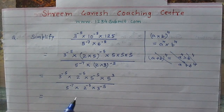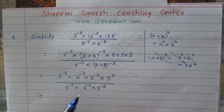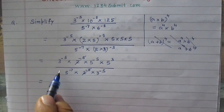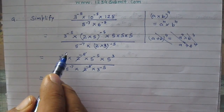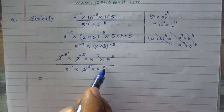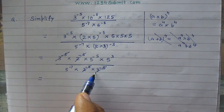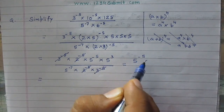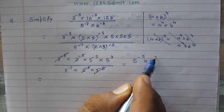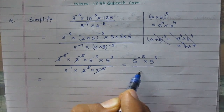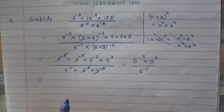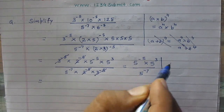Now, 2 raised to power minus 5 is present in both the numerator and denominator, so they cancel. Similarly, 3 raised to power minus 5 in the numerator cancels with 3 raised to power minus 5 in the denominator. Finally, we get 5 raised to power minus 5 multiplied by 5 raised to power 3 in the numerator, and 5 raised to power minus 7 in the denominator.